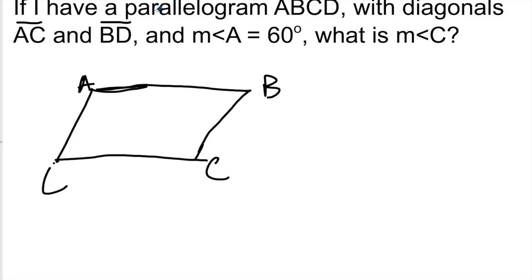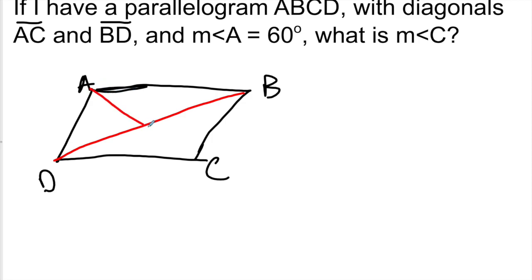So you have A, B, C, D going clockwise, and then you draw in the diagonals BD and AC. If the measurement of angle A — the whole angle — is 60 degrees, we look at our property sheet: what do we know about the opposite angles of a parallelogram? They're congruent. So that means angle C also has to be 60 degrees.